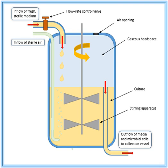A mid-range dilution rate creates a selection pressure for a mutant strain with a higher affinity to the limiting substrate. A slow dilution rate creates a selection pressure for a mutant strain which can grow in media with no limiting substrate, presumably by consuming a different substrate present in the media. The time for takeover of a superior mutant will be quite constant across a range of operation parameters, on the order of days to weeks.